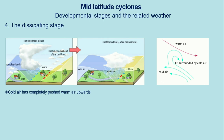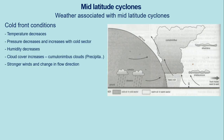Those are the four stages of how mid-latitude cyclones develop. You need to be able to draw each stage and describe what happens at each stage for exam purposes. Now we'll talk about the weather associated with mid-latitude cyclones. You also need to be able to draw the representations of the cold front and warm front.